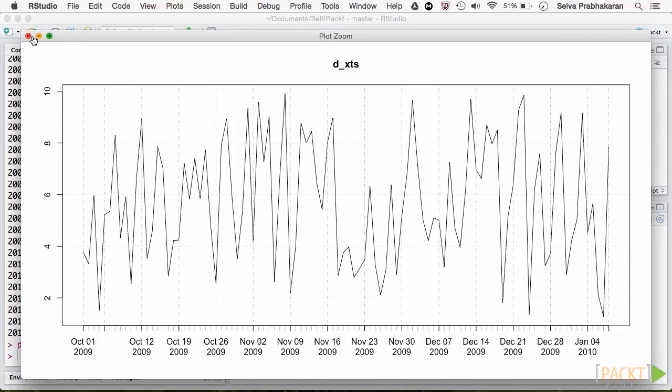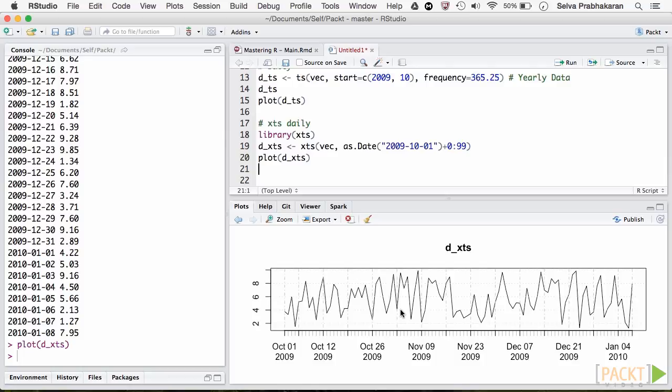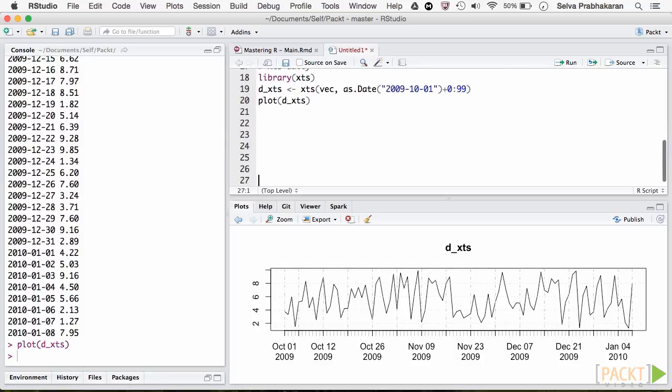XTS makes it convenient to work with multiple time series as well. We can create the dates and the matrix of time series as one object. Then, we will convert it into an XTS object.